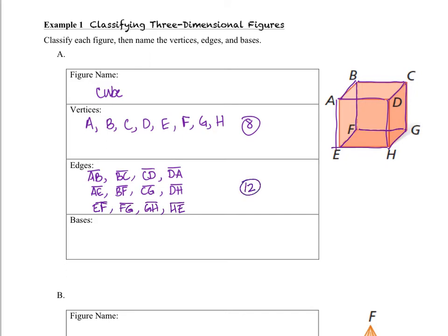Let's take a look now at our bases. We have, we said, two square bases. So we could really pick any of these, but I'm going to pick A, B, C, D, and E, F, G, H as our two square bases.